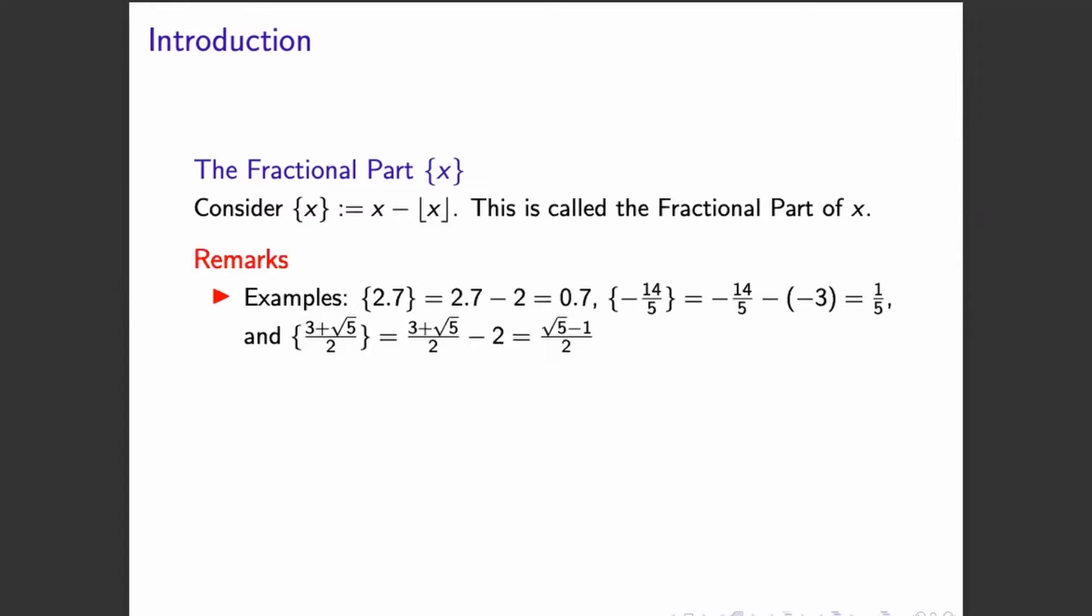we can subtract the integer part of 2.7, which is 2. So if we remove it, we are left with 0.7.